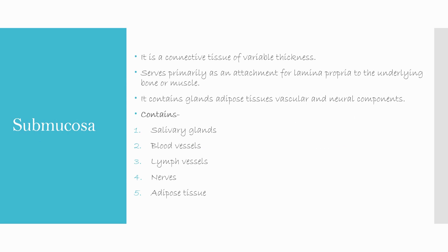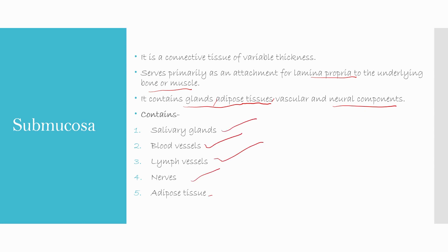Then comes the submucosa — a connective tissue of variable thickness. It serves primarily as an attachment for the lamina propria to the underlying bone or muscle. It contains glands, adipose tissues, vascular and neural components — including salivary glands, blood vessels, lymph vessels or lymph nodes, nerves, and adipose tissues for fat resorption.